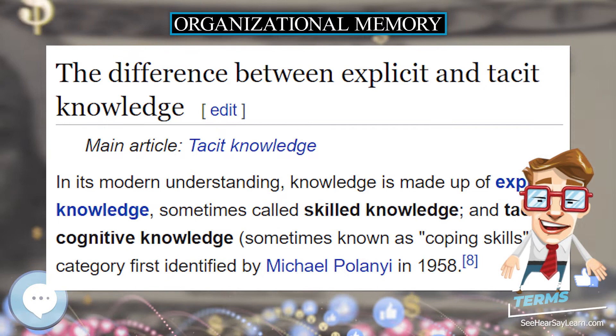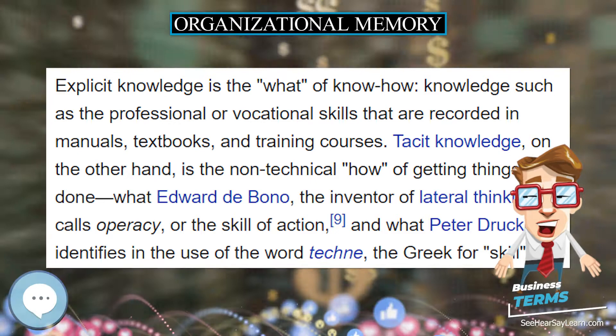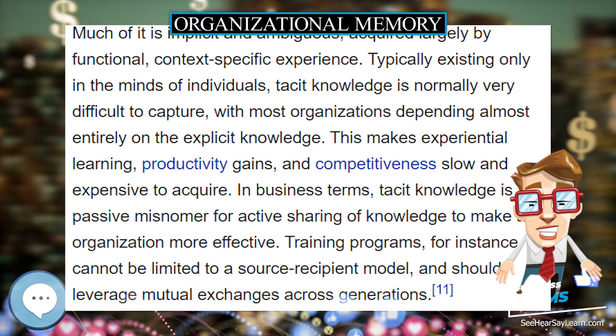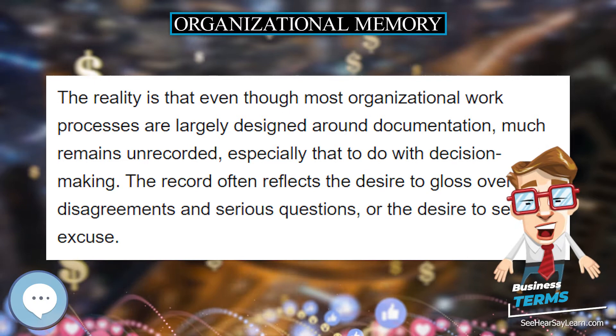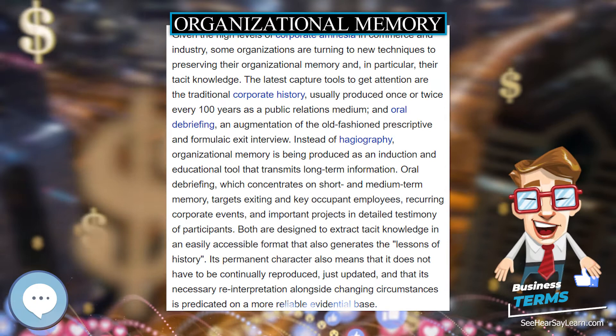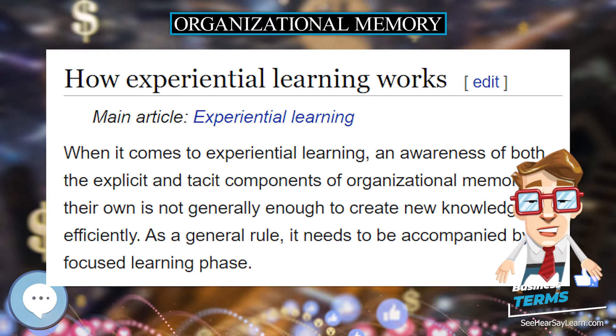Once knowledge is documented, it reverts to being information. New knowledge — what some academics call knowledge in action — is that which is either created incrementally, accidentally, or through innovation. Incremental knowledge is the product of prior experience that is already established and recognized, so-called organic learning that builds one experience on another, also known as existent or historical knowledge.